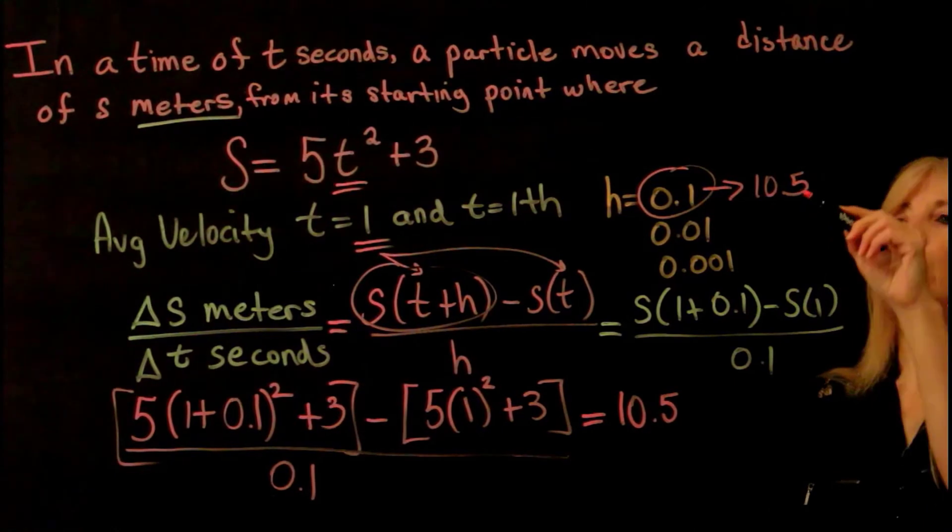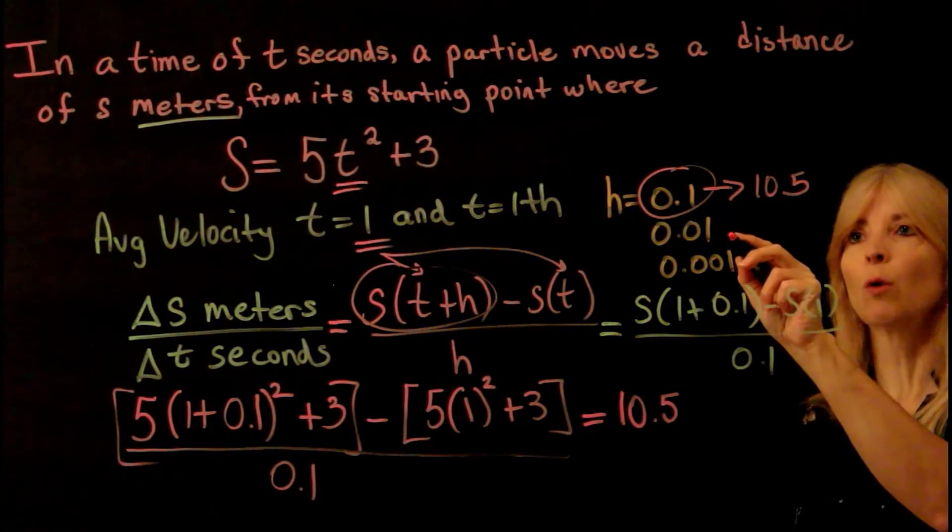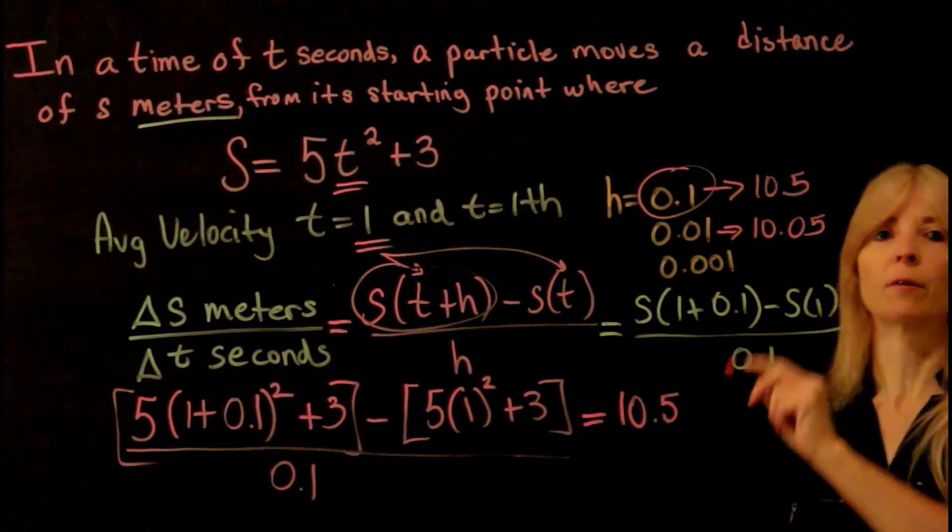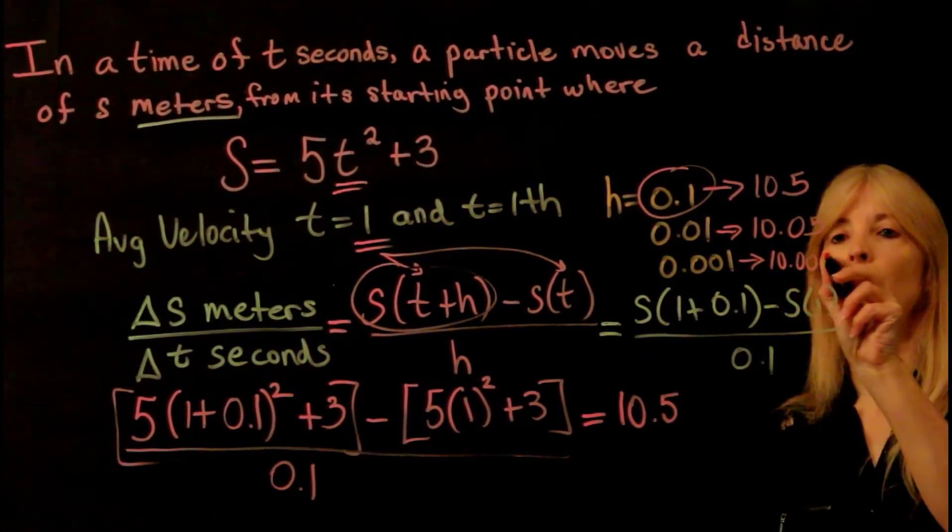If you do this all over again, and now your h becomes 0.01, you will see you'll get 10.05. If you do this all over again, you'll see you get 10.005.